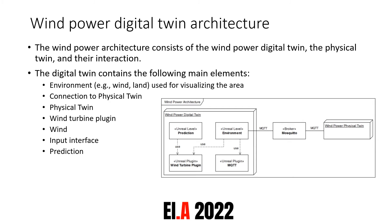The digital twin consists of some smaller parts. We have the environment, which is the real-time component — the world where you can navigate around and see the visual impact of a wind turbine. We also have the prediction component. Both the prediction and environment components make use of the wind turbine plugin. In addition, the environment makes use of the MQTT plugin to be fed data from the physical twin in real-time.